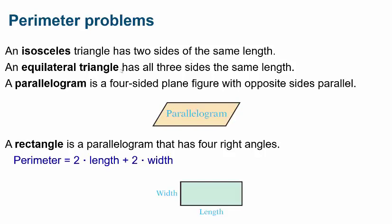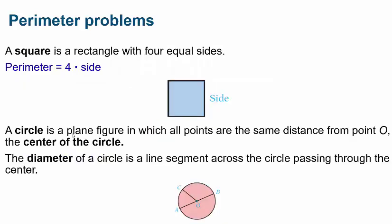An isosceles triangle has two sides of the same length, while an equilateral triangle has all three sides of the same length. A parallelogram is a four-sided figure with opposite sides that are parallel. A rectangle is a parallelogram with four right angles; its perimeter is two times the length plus two times the width. A square is a rectangle with four equal sides, so its perimeter is just four times the length of one side.